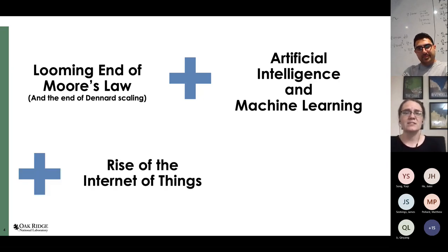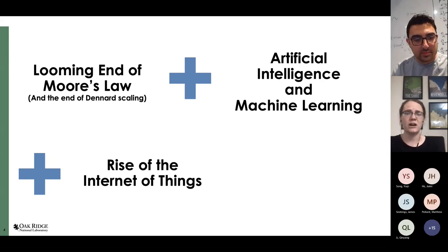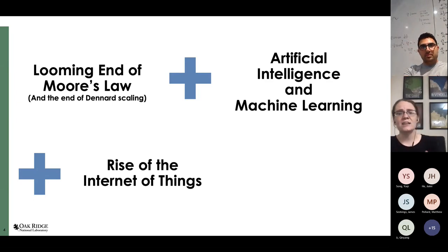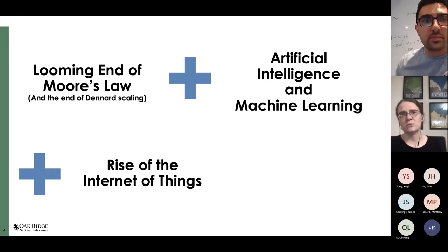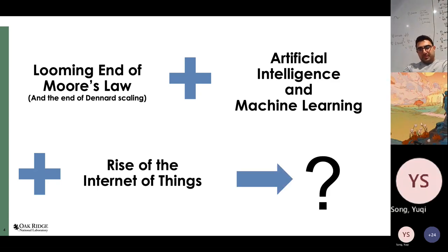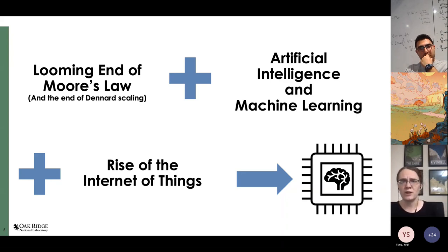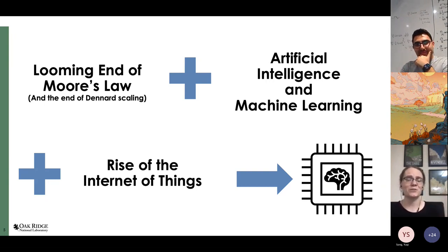The third factor coming into play is the rise of the Internet of Things. We're pushing compute out everywhere now — not just workstations, laptops, the cloud, and high-performance computers, but compute is in our watches, microwaves, and washing machines. In many of these locations, we need very low-power, very efficient implementations. With these three factors in mind, it makes sense that the community would be looking to the brain for inspiration — particularly neural network-inspired hardware — because the brain is the ultimate learning machine, and it does so with very, very low power.